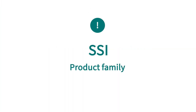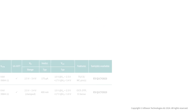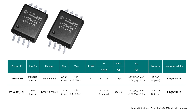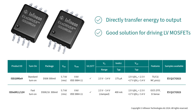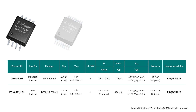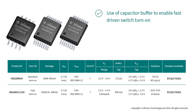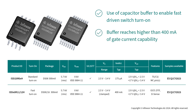The new SSI product family has five devices with different feature sets. The ISSI 20R02H and ISSI 20R03H directly transfer energy to the output, similar to optical isolators, and are a good solution for driving low voltage MOSFETs. Thanks to improved energy transfer, the driving current is at least 20x compared to other isolation technologies — for example, 200 microamperes versus 10 microamperes. The ISSI 20R11H, ISSI 30R11H, and ISSI 30R12H use a capacitor buffer to enable fast turn-on of the driven switch, reaching higher than 400 milliamperes of gate current capability for proper driving of high voltage switches.